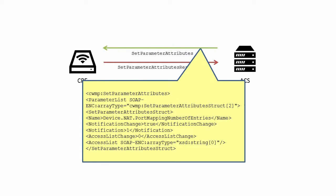There are three different notification states: none, passive, and active. As arguments in the Set Parameter Attributes RPC, these are noted as 0, 1, and 2, respectively.